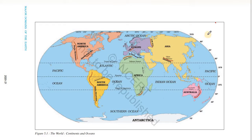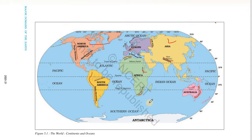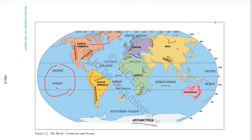Students, we are reading Geography, fifth chapter: Major Domains of the Earth. In this chapter we have read about continents. There are seven continents. The biggest continent is Asia, second is Africa, third is North America, and the smallest continent is Australia. The seven continents are: Asia, Africa, North America, South America, Europe, Australia, and Antarctica.